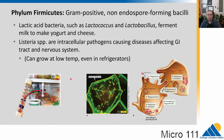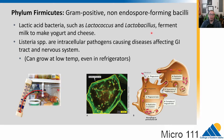Some other interesting firmicutes are the non-endospore-forming bacilli. We have lactic acid bacteria — Lactococcus and Lactobacillus — that will ferment milk to make yogurt and cheese. So if you like those two things, these bacterial species are very important.